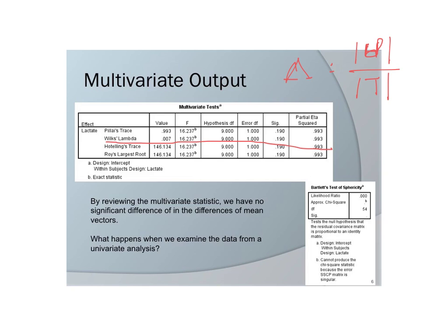Wilks' Lambda is converted into an F-ratio so that we can plot it on an F-distribution with appropriate degrees of freedom. However, from this perspective, if we're looking at the mean vector differences of trials or times, we're going to have non-significance. We would have to say there are no significant mean vector differences in lactate.